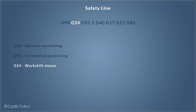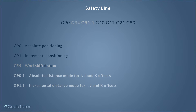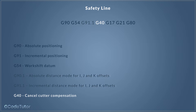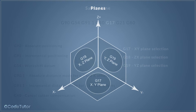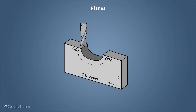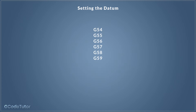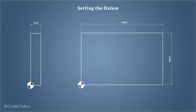We start off by taking a look at safety lines so we can put the machine into a safe state before each tool, and we're going to be looking at our planes, our working planes, and also how to set the datums using the various techniques and styles.